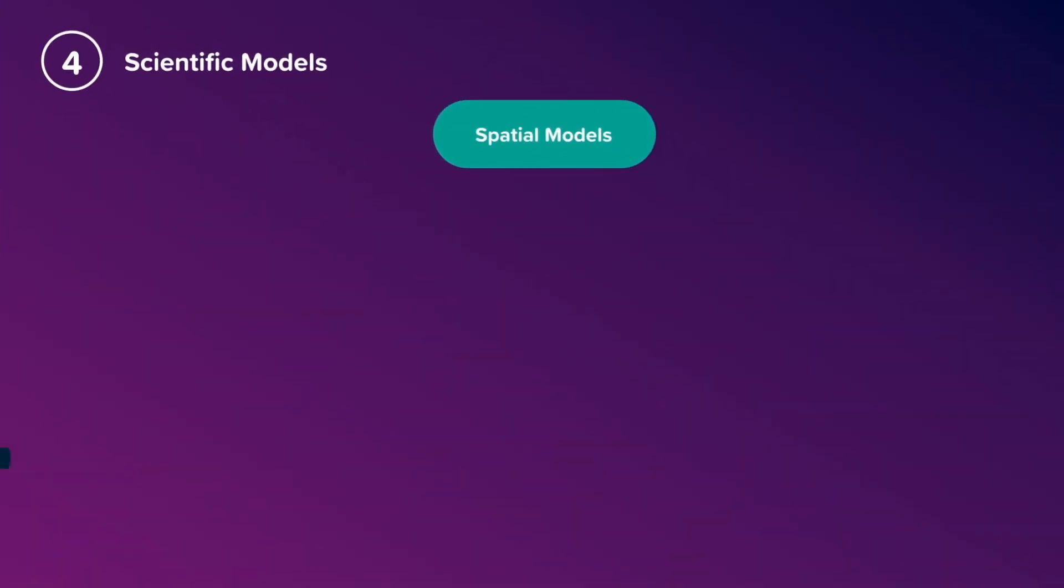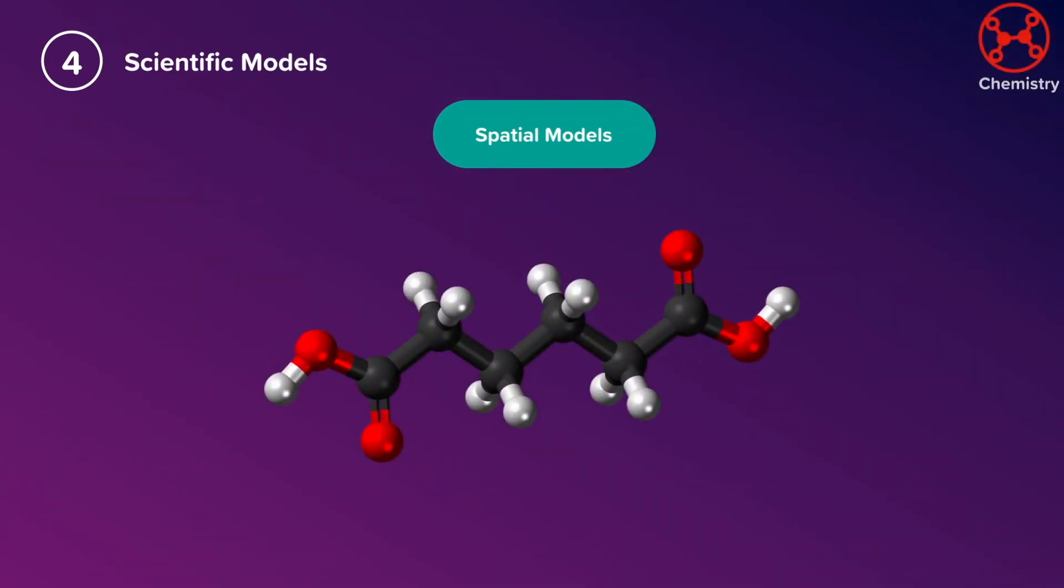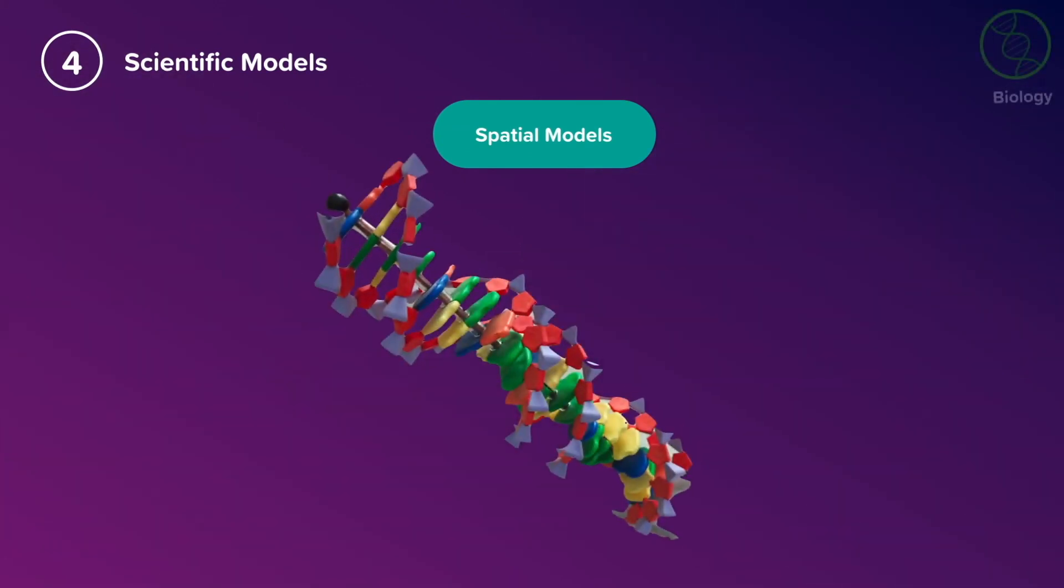Spatial models provide a view of microscopic structures, such as molecules and their different bonds within them, using polymer kits. Or you may have seen models of the different structures that come together to build a DNA molecule, like this.